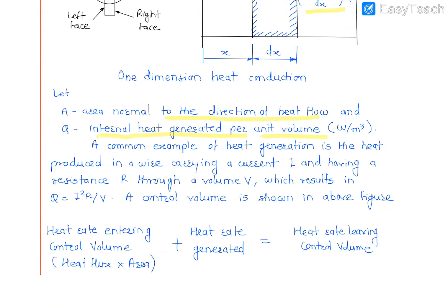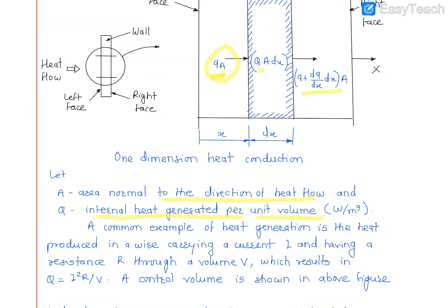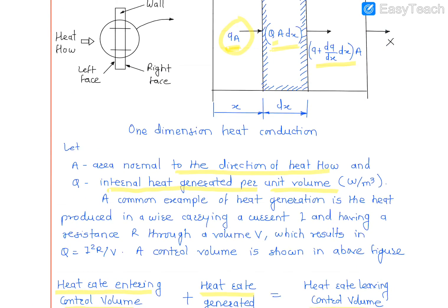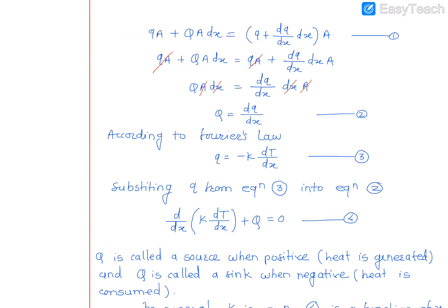Heat rate entering the control volume plus heat rate generated equals heat rate leaving the control volume. If you write it, it will be QA (heat flux entering times the volume), plus Q·A·dx (Q is the internal heat generated per unit volume, and area times dx is the volume), equals (Q + ∂Q/∂x·dx) times area.